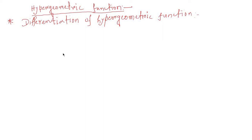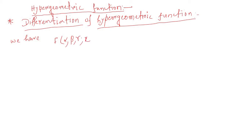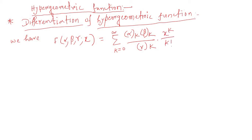In this presentation, we will discuss the differentiation of the hypergeometric function. We have F(α, β; γ; x) equal to the summation from k equal to 0 to infinity of (α)_k (β)_k over (γ)_k times x to the power k over k factorial. This is our equation number 1.